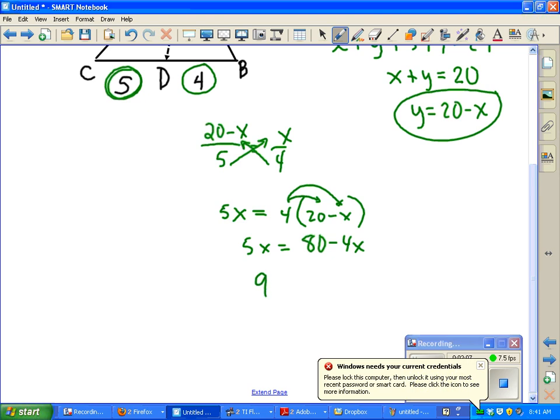If you add 4X to both sides, 9X equals 80. And if you divide by 9, you have X equals 8 and 8 ninths, or 8.88.